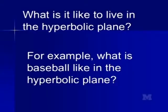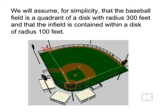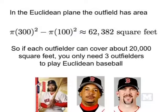The question I want to talk about is: using the fact that area grows exponentially, what is it like to live in the hyperbolic plane? Let's use sports to figure that out — how about baseball? A baseball field is roughly a quadrant of radius 300 feet, with an infield radius of 100 feet. The outfield has area roughly 60,000 square feet. With three outfielders each covering 20,000 square feet, they can cover most of the outfield — and in baseball, they do a pretty good job.